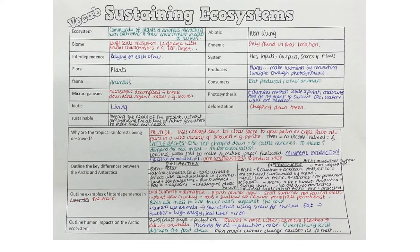Producers are at the bottom of the food chain — plants that use sunlight through photosynthesis to create energy. Then you've got consumers that eat the producers, with energy moving through the food chain. Photosynthesis is where plants take in carbon and use it alongside water and sunlight to produce their energy and food. Sustainability means meeting the needs of the present without compromising the ability of future generations to meet their own needs.